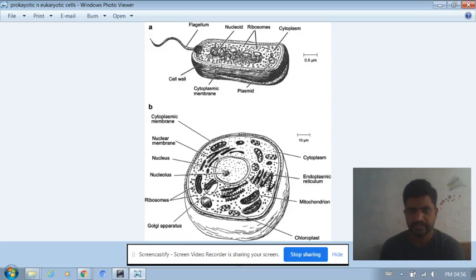This cell is not having a well-defined nucleus the way in which it is present here. So this is before formation of nucleus, therefore it is called prokaryotic cell. And this is after formation of nucleus, therefore it is called eukaryotic cell.